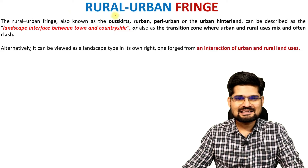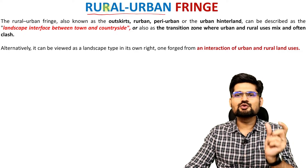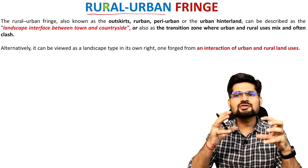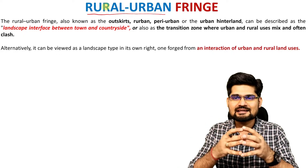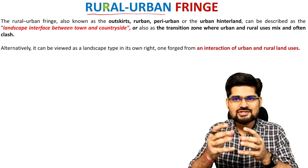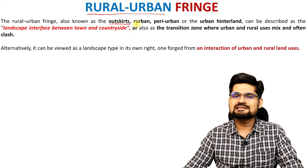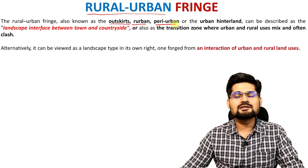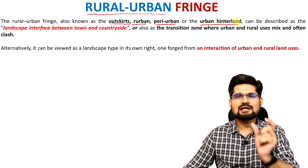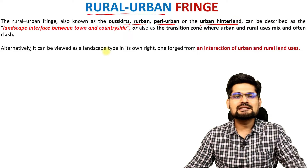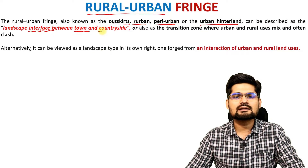Now let's understand the concept of rural urban fringe. The word itself is rural urban — it means there is a combination of rural as well as urban, and the word fringe means externality or the edge. So rural urban fringe is also known by the words outskirts, peri-urban, or many times urban hinterland. This can be simply described as the landscape interface between town and countryside.